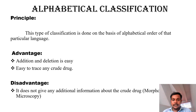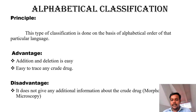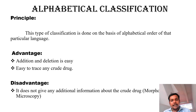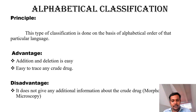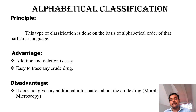Now we will discuss about alphabetical classification of crude drugs. Among all the systems of classification, it is the easiest and simplest. It is based on the principle that we classify all crude drugs based on the alphabetical order of that particular country's language. For example,